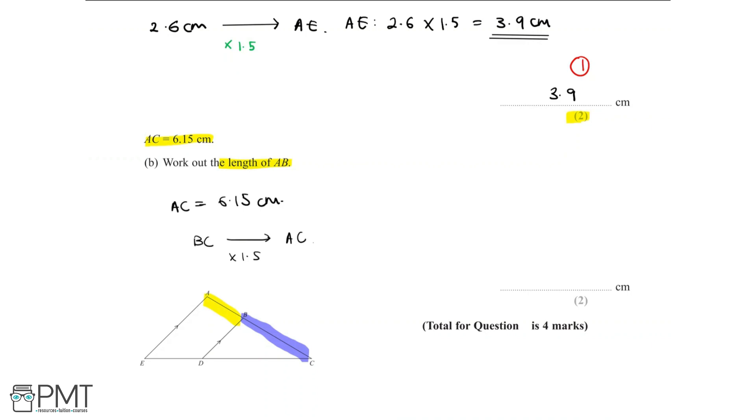We know that AC is 6.15cm, so to find BC, we'll do 6.15 divided by 1.5 in order to get an answer of 4.1cm. So BC is 4.1cm.